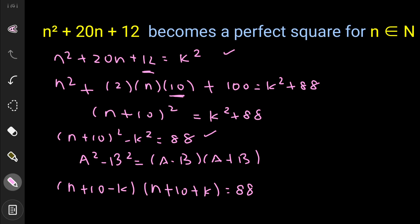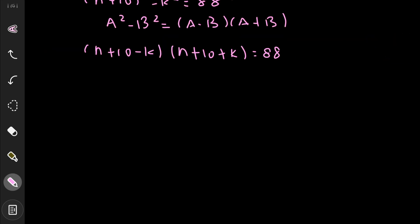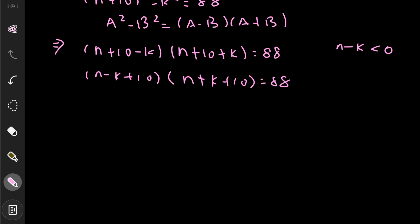Now, since n² + 20n + 12 = k² and n is a positive integer, k is always greater than n, so n − k is always less than 0. Therefore the first bracket (n − k + 10) will always be less than 10, because n − k is negative and adding 10 gives a result still less than 10.